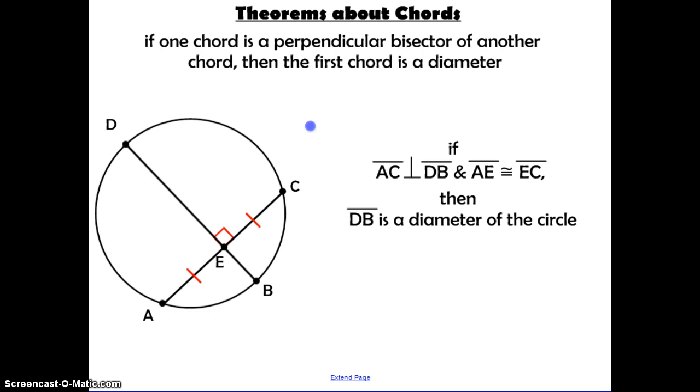This theorem is kind of like the converse of it, but the wording is slightly different. If you have this chord AC, and it gets cut in half by this other chord, and that second chord is perpendicular to it, then you can say that DB is the diameter of the circle.